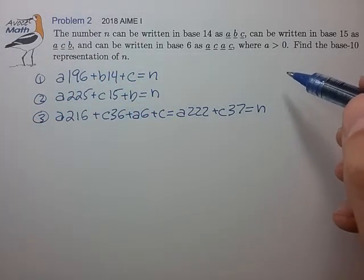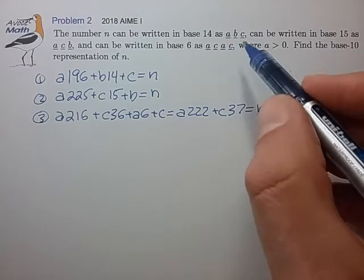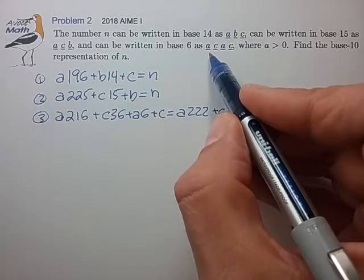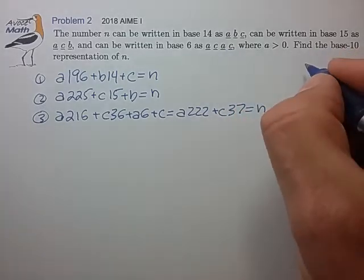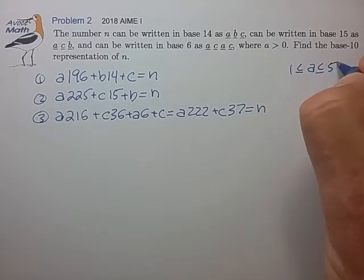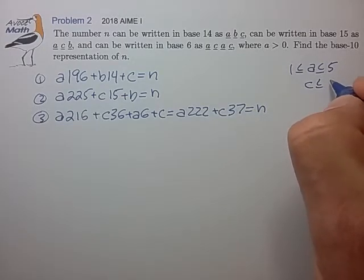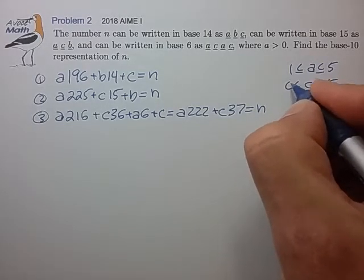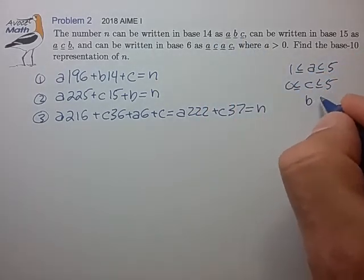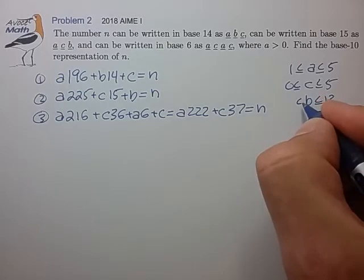Since we have these numbers in their bases, we know that a and c have to be from 0 to 5, and a is not equal to 0. So a is in the range 1 to 5, c is 0 to 5, and b is a base 14 number, so b is from 0 to 13.